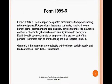The 1099-R is used to report designated distributions from profit sharing, retirement plans, IRAs, pensions, insurance contracts, survivor income benefit plans, permanent and total disability payments under life insurance contracts, charitable gift annuities, and annuity income. Death benefit payments made by employers that are not part of a pension, retirement plan, or profit sharing are also reported in Box 1. If payments are subject to withholding of Social Security and Medicare taxes, a W-2 or 1099 miscellaneous may be used instead.